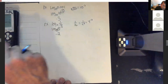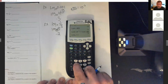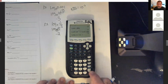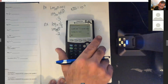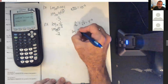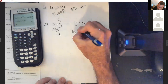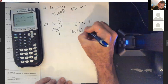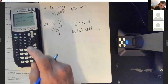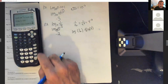Let's verify on the calculator: go to log base, enter, base is 4, and the argument is 1 divided by 16. For change of base: log(1/16), close parentheses, divided by log(4). Make sure you close the parentheses each time. That should still give you negative 2.